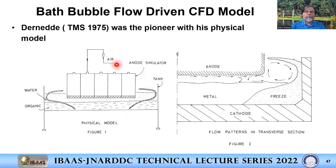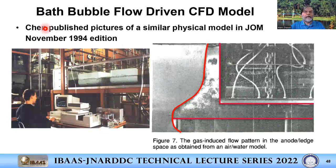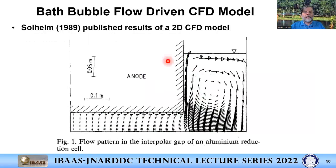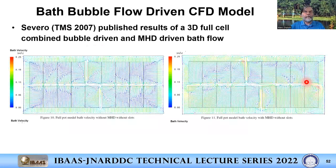The next topic is the bubble model, pioneered by Dara D. with a physical model, and then Chen at Aarhus University 20 years later. You can see the bubbles generated by injecting air to create a two-phase flow. The first numerical calculation was by Solheim in Norway, 1989, and then Severo at KIT Brazil with a full 3D solution — either bubble flow alone or combined with MHD flow, around 2007.